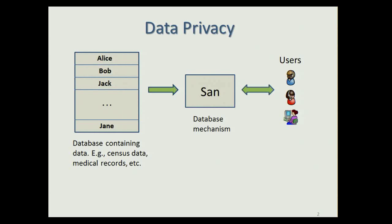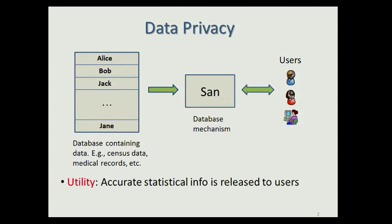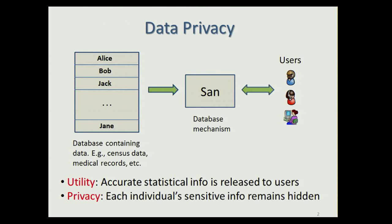There are two main goals. One of them is utility — we want to release accurate statistical information to the users. The second goal is privacy — we want to make sure that each individual's sensitive information remains hidden.